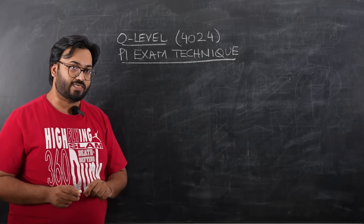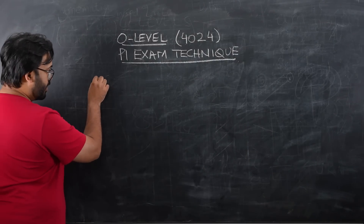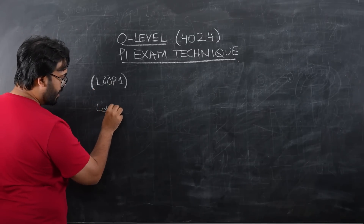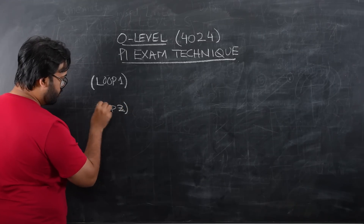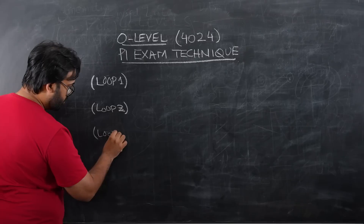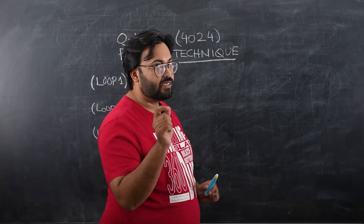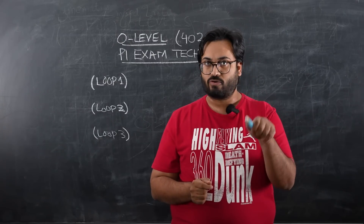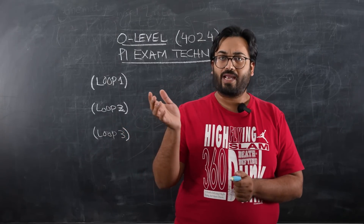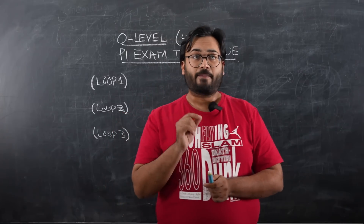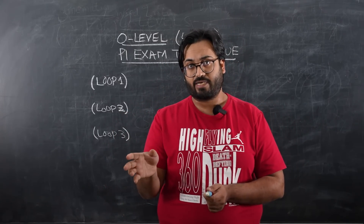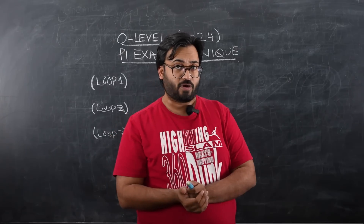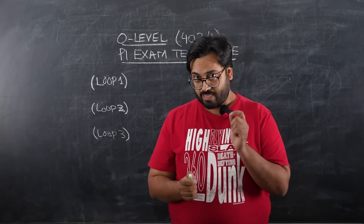For your O-Level Paper 1 exam, you will have two hours to attempt around 20 to 25 questions. We're going to break your entire exam into three loops: Loop 1, Loop 2, and Loop 3. Generally, students attempt the exam in two loops — the first for questions they know, and the second for harder ones. This approach leaves candidates short of time and unable to complete the entire paper.